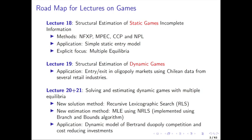That's what Aguirre-Gabiria and Mira did in their 2002 Econometrica paper for single-agent models, and then extended to dynamic games. It turns out there are disturbing properties of that algorithm when you have models where equilibria are unstable, or particularly when you have multiple equilibria in games with lots of anti-coordination — this algorithm has poor convergence properties. That's why Estay-Lien-Sue proposed to use MPEC instead to solve some of those issues.